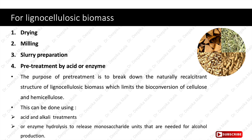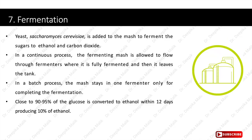The next step after these pre-treatments is fermentation. Yeast Saccharomyces cerevisiae is added to the mash to ferment the sugars to ethanol and carbon dioxide. In a continuous process, the fermenting mash flows through fermenters where it is fully fermented. In a batch process, the mash stays in one fermenter to complete fermentation. Close to 90 to 95 percent of the glucose is converted to ethanol within 12 days, producing 10 percent ethanol.